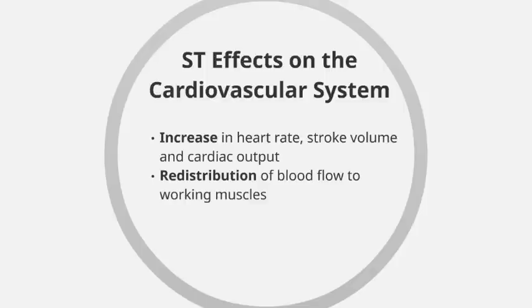We also see a redistribution of blood flow to the working muscles. To help with the delivery of oxygen through the blood, there is increased blood flow to the muscles that need it. As a result, less blood is sent to the muscles and organs that don't have the same high demand for oxygen — blood and oxygen are directed primarily to the areas of the body that are working. This redistribution is known as a vascular shunt, where blood is redistributed to the working muscles.